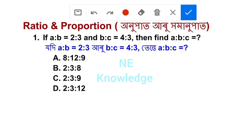First question: if A to B is equal to 2 is to 3, and B to C is equal to 3 is to 4, then find A to B to C.